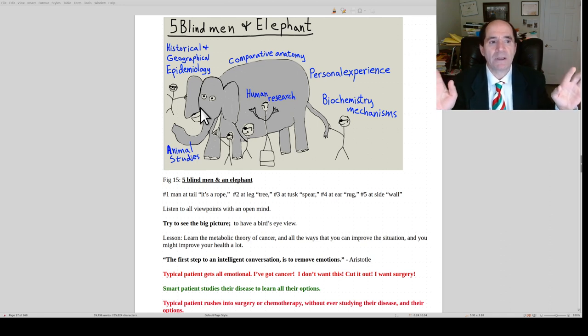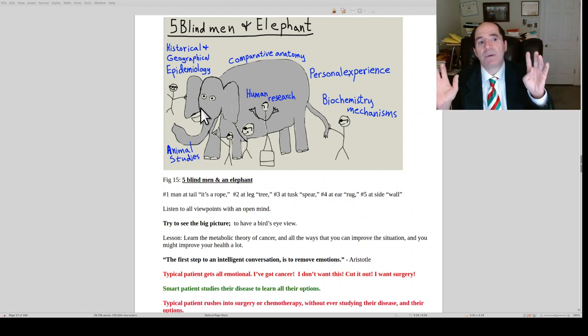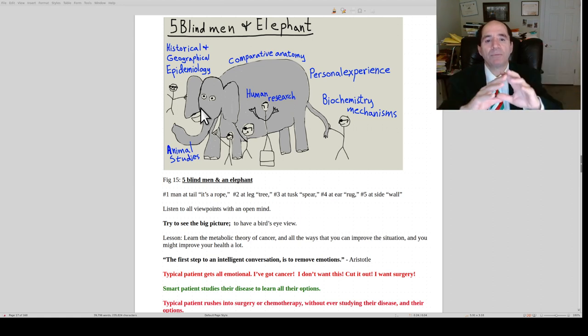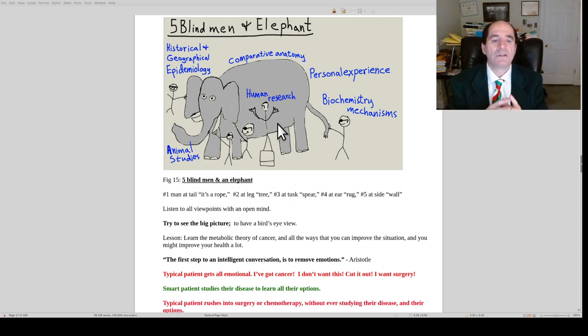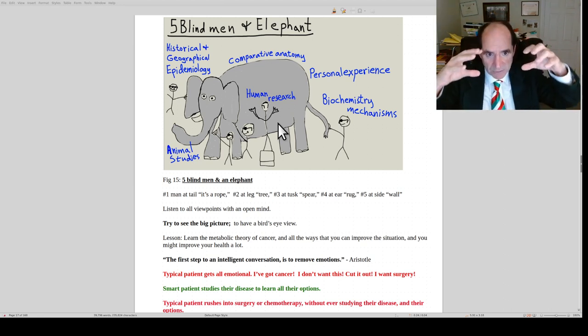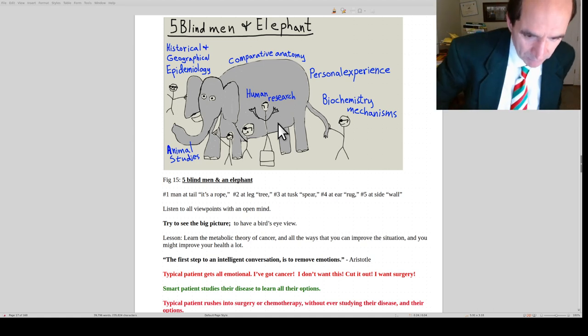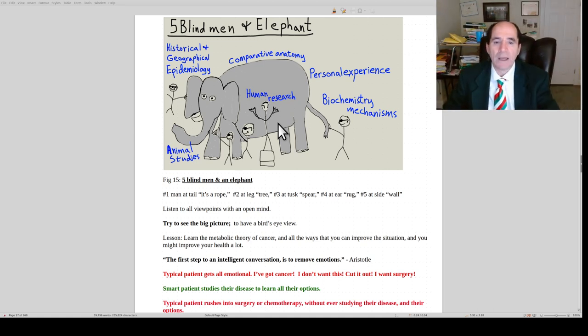You'll often do something stupid like agree to chemo or surgery when that's not the best thing for you. Maybe it is the best thing for you in some cancers. But you come to that conclusion based on having studied it from multiple different perspectives in some detail and having talked to other people. So that's how you make good decisions. Like Aristotle said, the first step to an intelligent conversation is to remove emotions. You have to get an objective sense so you can kind of stand above it and have a bird's eye view and recognize I'm dealing with an elephant. That's real important.